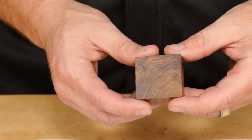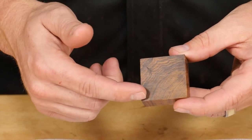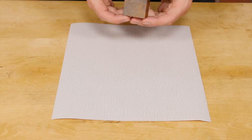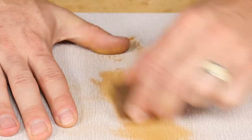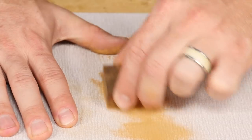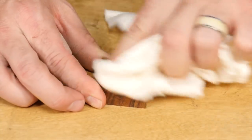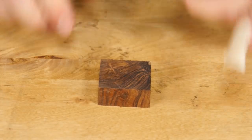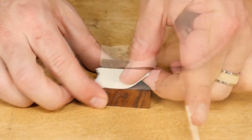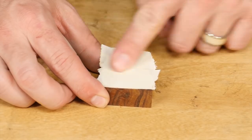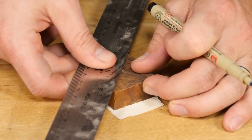Before we go to the lathe we'll need to make sure our blank has a flat reference face. Simply lay out some 220 grit sandpaper on a flat surface and sand one side of the blank entirely flat. Now wipe off the dust and apply double-sided tape to the flattened side. Now flip it over and mark the center for drilling.